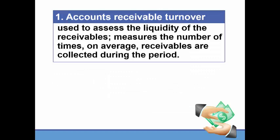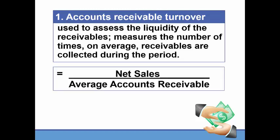The first set of ratios we're going to look at evaluate the performance of accounts receivable, specifically the accounts receivable turnover. This is used to look at how liquid the receivables are. We want to see if we're actually collecting them as we're supposed to according to our credit policy. The formula is net sales over average accounts receivable.